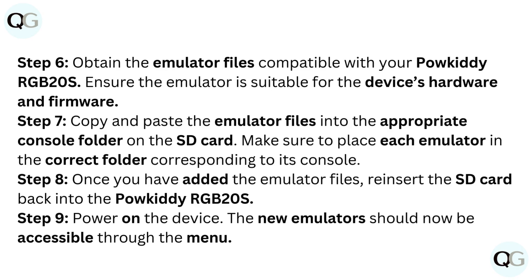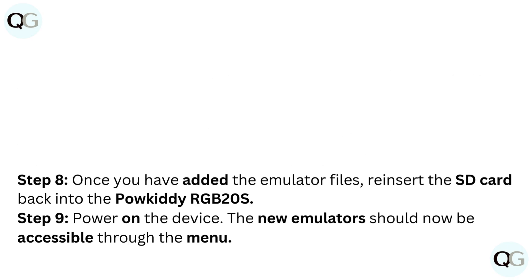Step 8: Once you have added the emulator files, reinsert the SD card back into the PowKiddy RGB20S. Step 9: Power on the device. The new emulators should now be accessible through the menu.